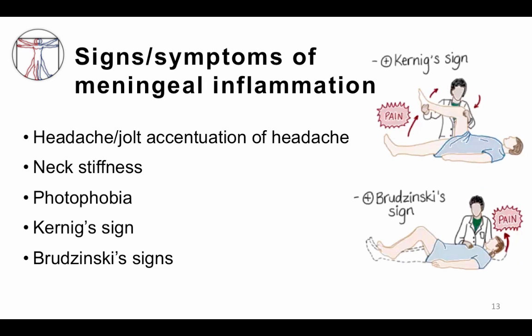Kernig's sign, as you can see in the picture, involves the inflamed meninges extending from the back of the brain down the spinal cord — lifting the leg up stretches this inflamed surface and can cause pain. Brudzinski's sign is when lifting the neck causes the legs to come up, also suggesting inflammation throughout the meninges.